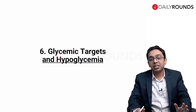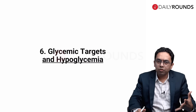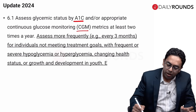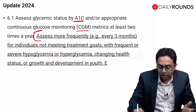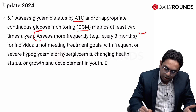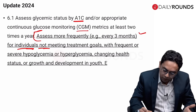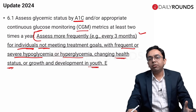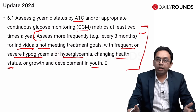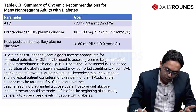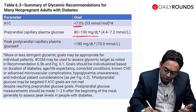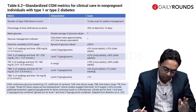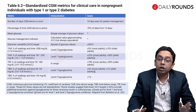Section 6 covers glycemic targets and hypoglycemia. Most cutoffs remain the same: HbA1c less than 7%, fasting/pre-meal glucose 80–130 mg/dL, postprandial less than 180 mg/dL. New in ADA 2024: HbA1c and CGM metrics should be assessed more frequently — even every 3 months — for individuals not meeting treatment goals, those with frequent or severe hypoglycemia or hyperglycemia, changing health status, or youth in growth and development phases.